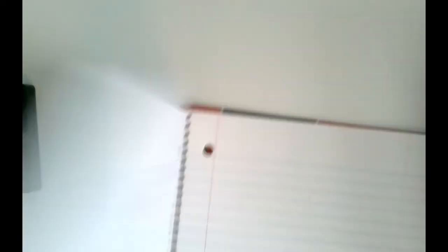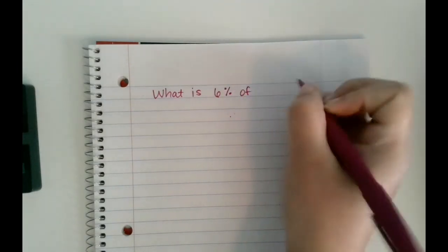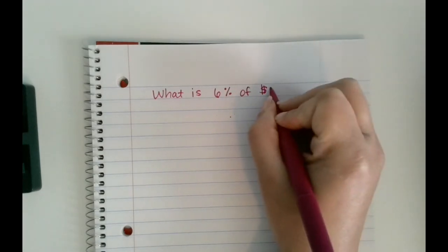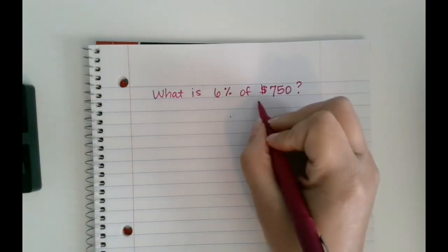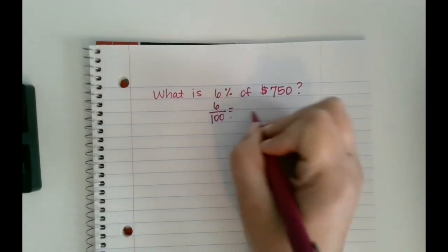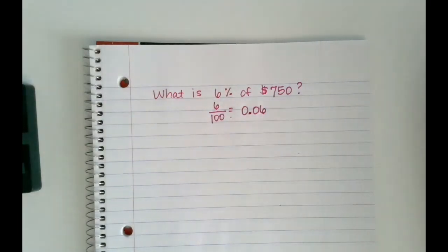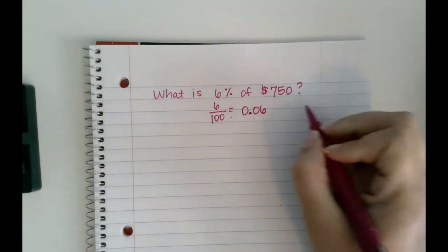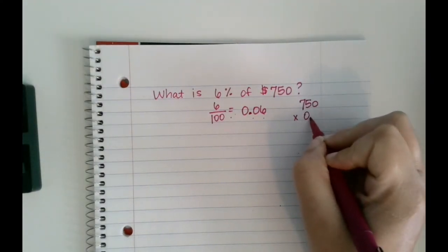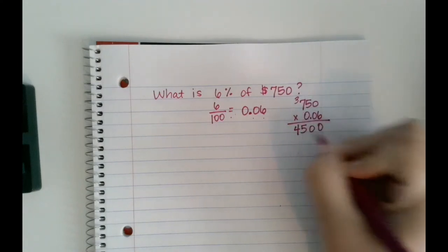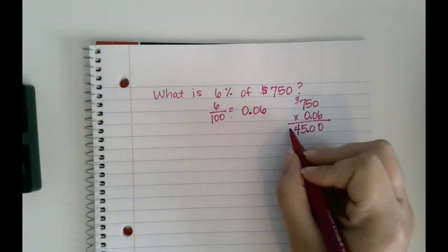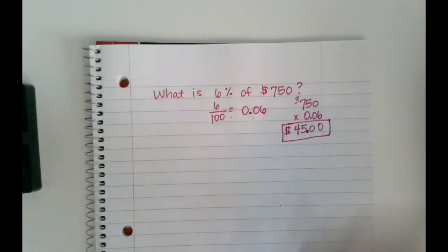Let's do one more. What is 6 percent of $750? Pause the video and solve. So 6 percent is 6 out of 100, so we want to be very careful about where we put that 6 - six hundredths, tenths, hundredths - and then I'm going to multiply. So my answer would be $45. I want to make sure I get my decimal in there. If you don't put the decimal in the right spot, you're not going to have the right answer.